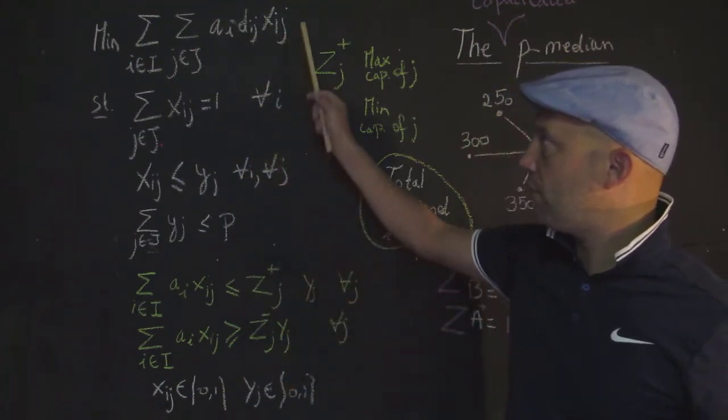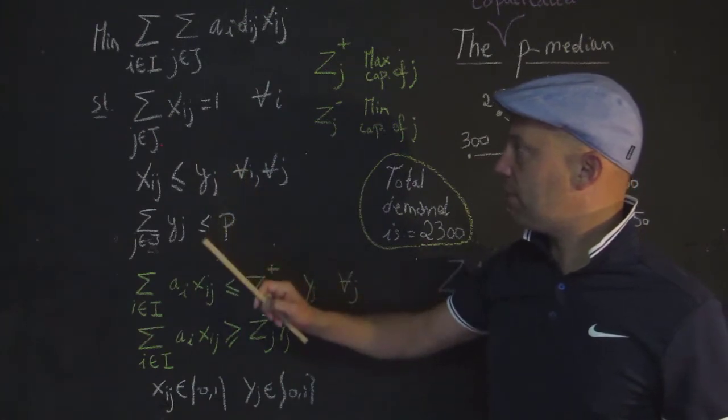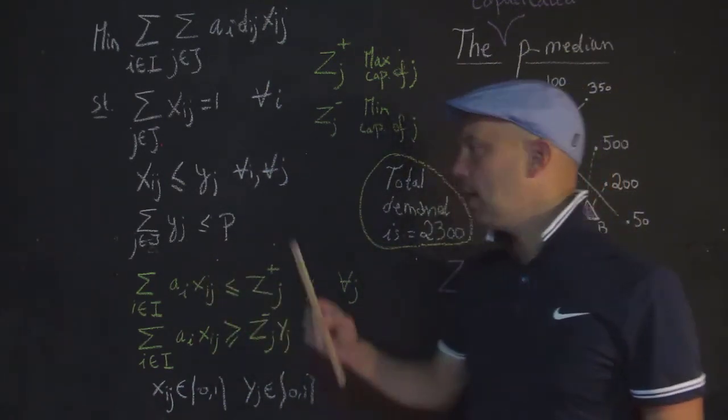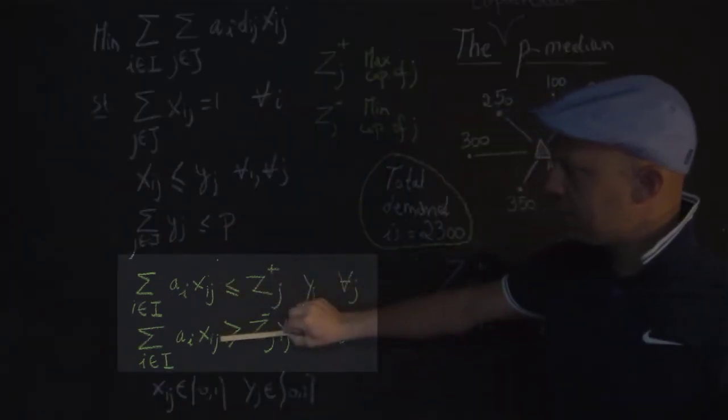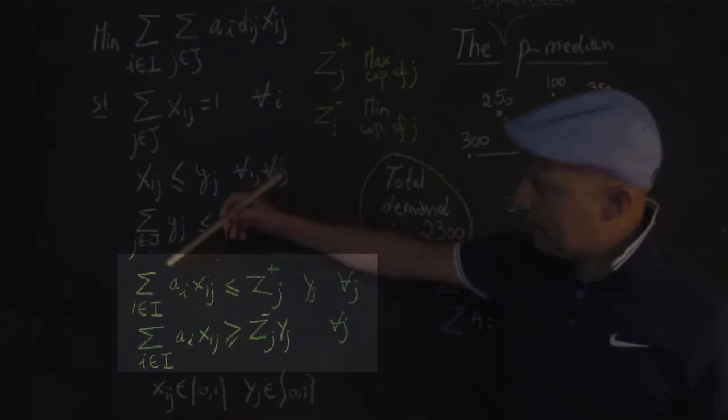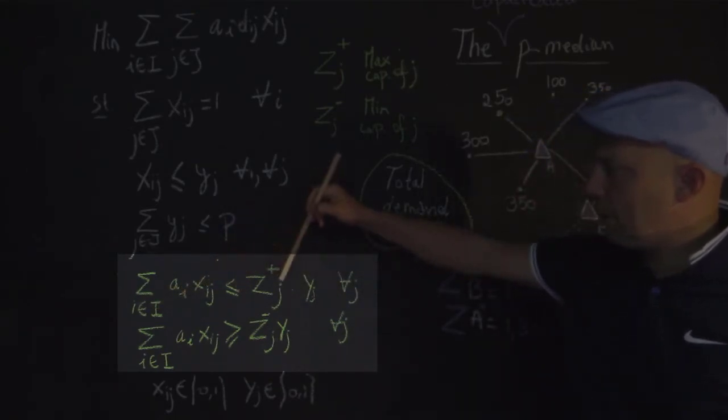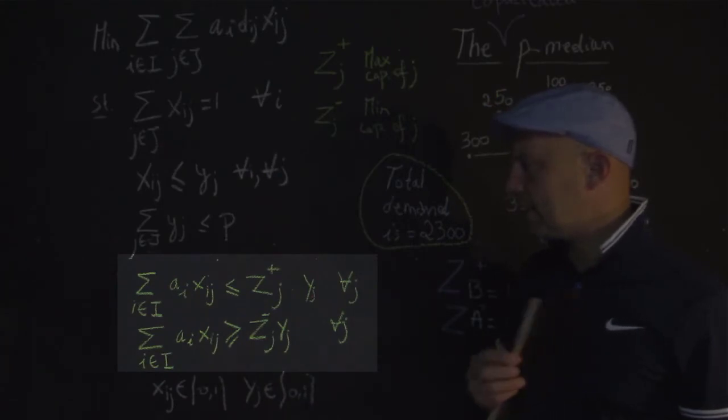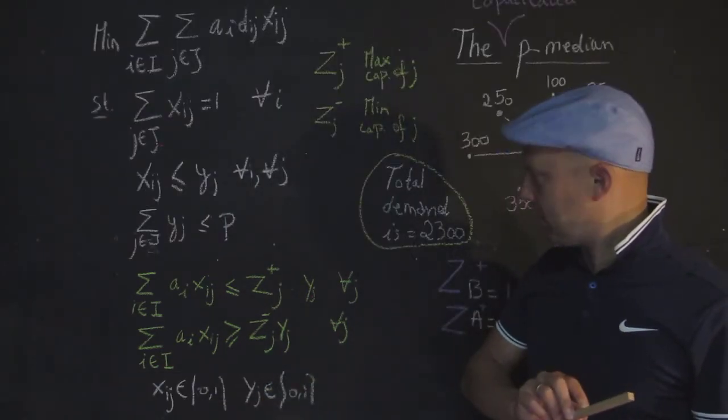So that's the minimization of the travel demand to the facilities. We also say that each demand node must be equal to one, so it must be assigned to a facility. A demand node can be assigned to a facility only if that facility exists. The number of facilities that can be opened in the system should be less or equal to p. And then we have these two new constraints here in yellow-green, where we're saying here that the total demand, sum over all the i's, should be less or equal to the upper capacity. And this we're going to do for each facility. And then here you also have the minimum capacity here that says that the total demand that originates from all the i's should be greater or equal to the minimum capacity.